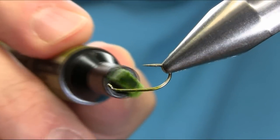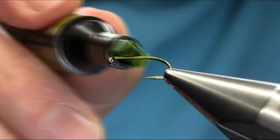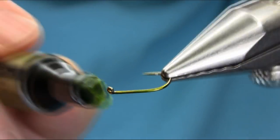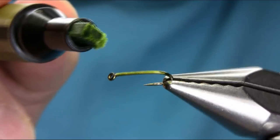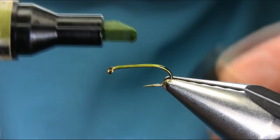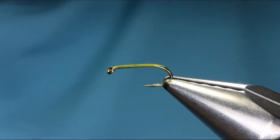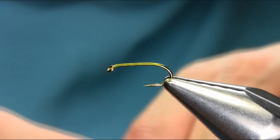It also works on a size 14. It's basically almost threadless. So I'm putting an olive green, olive color permanent marker onto the hook, and I'll explain all the materials I'm using.